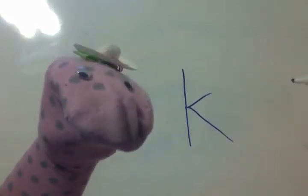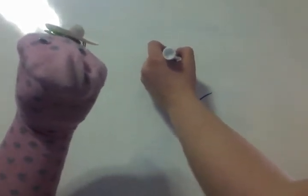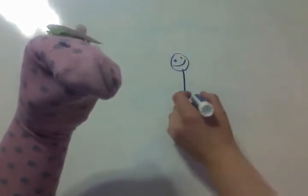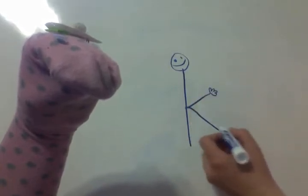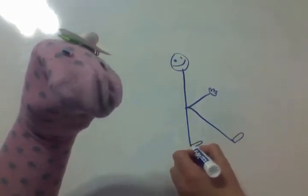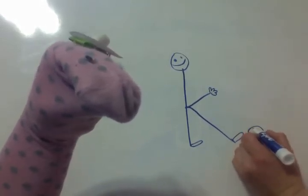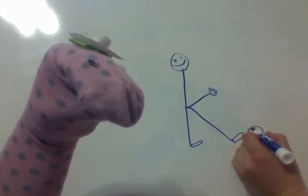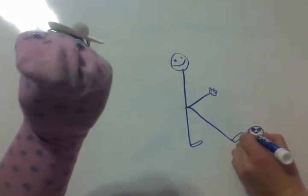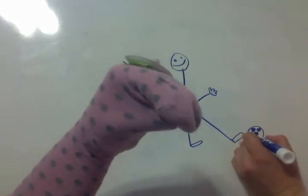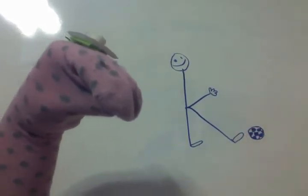I want to turn this into somebody who is kicking. So I'm gonna give him a little head here. And he's kicking up with his one hand, so he has his little hand here. And he's kicking with his foot. You know what, I'm gonna have him kicking a soccer ball. Oh my goodness, now I have to draw a soccer ball. Soccer balls are a little tricky, but I think I can get it. There we go — he's kicking a soccer ball!